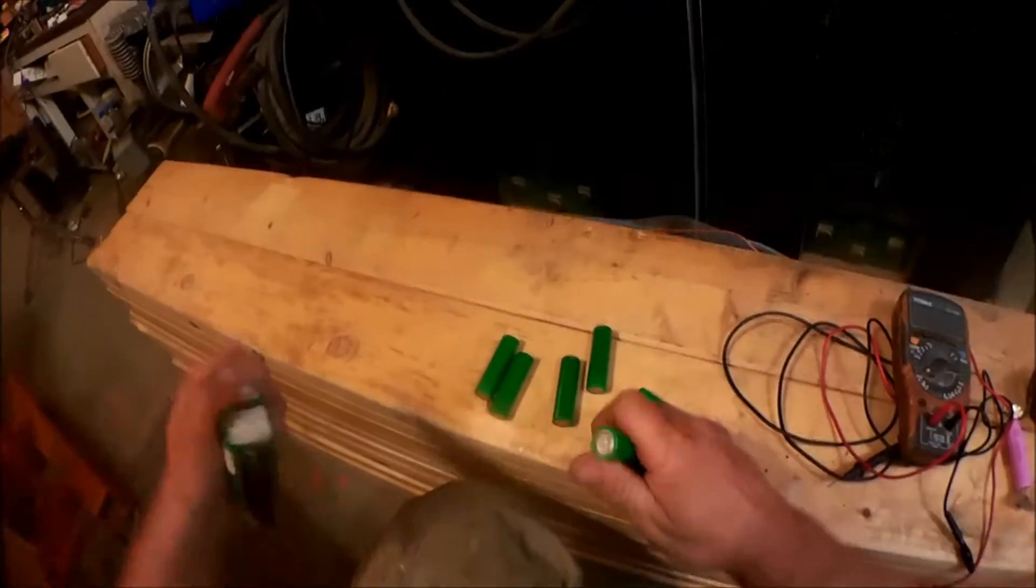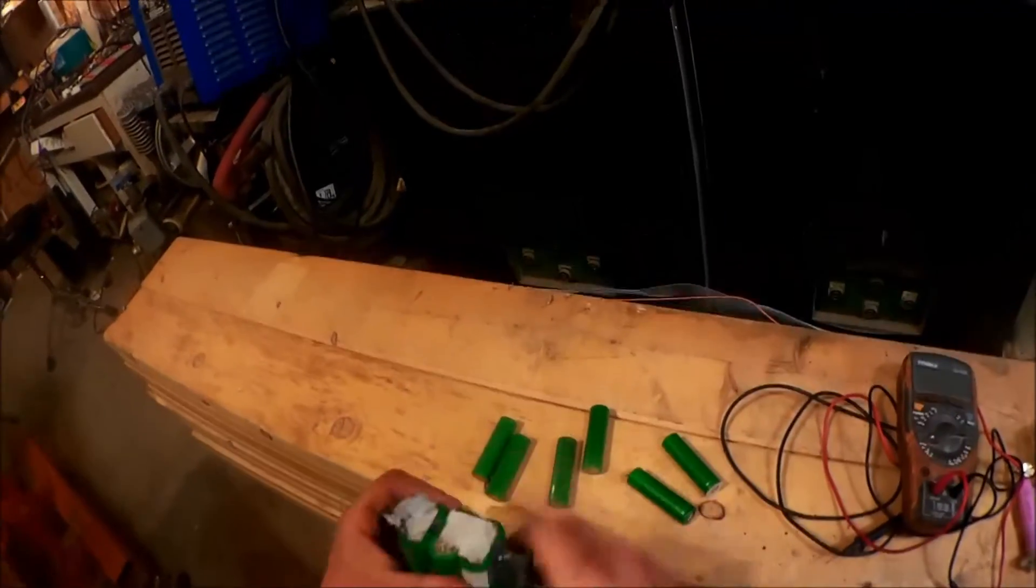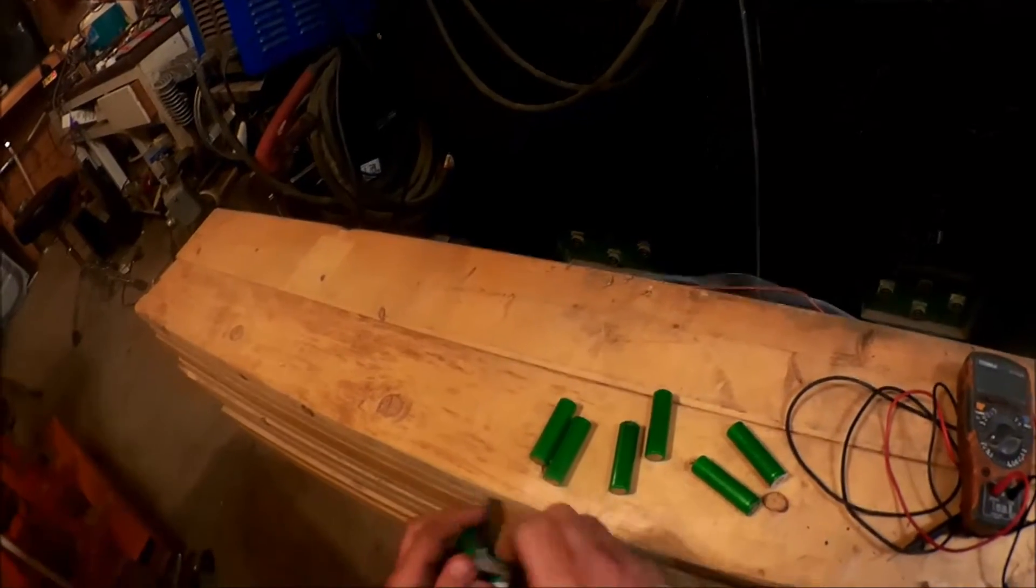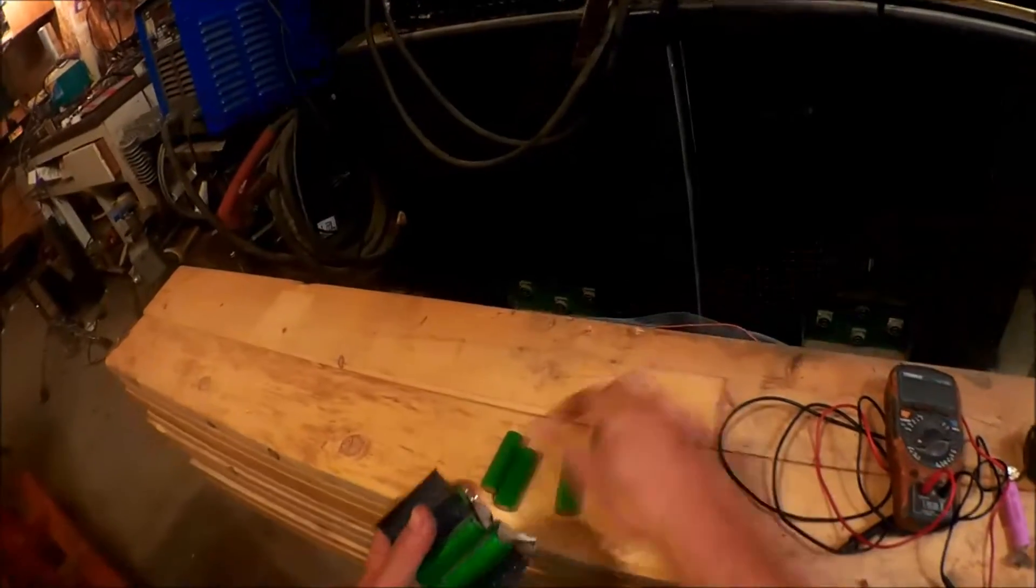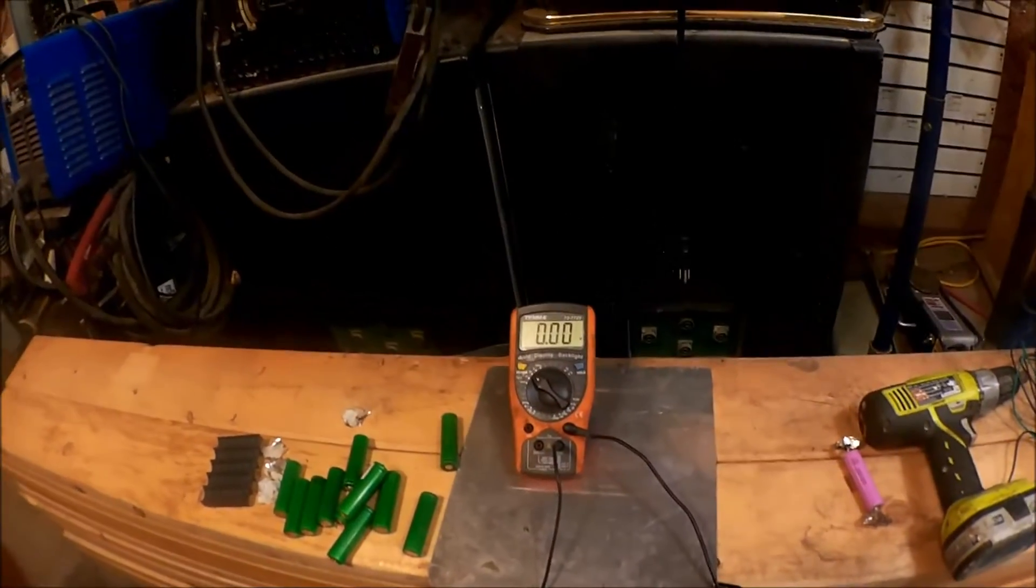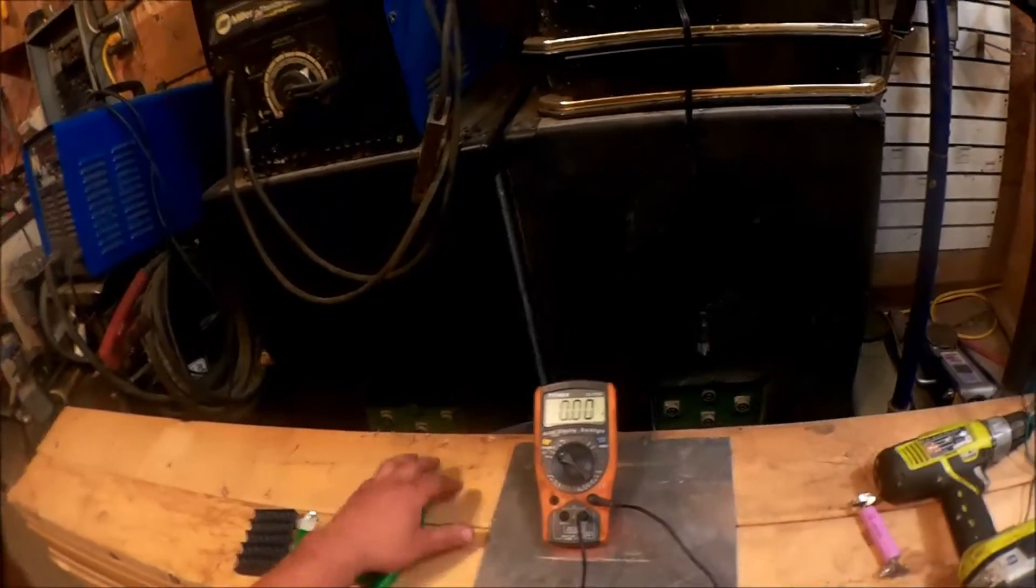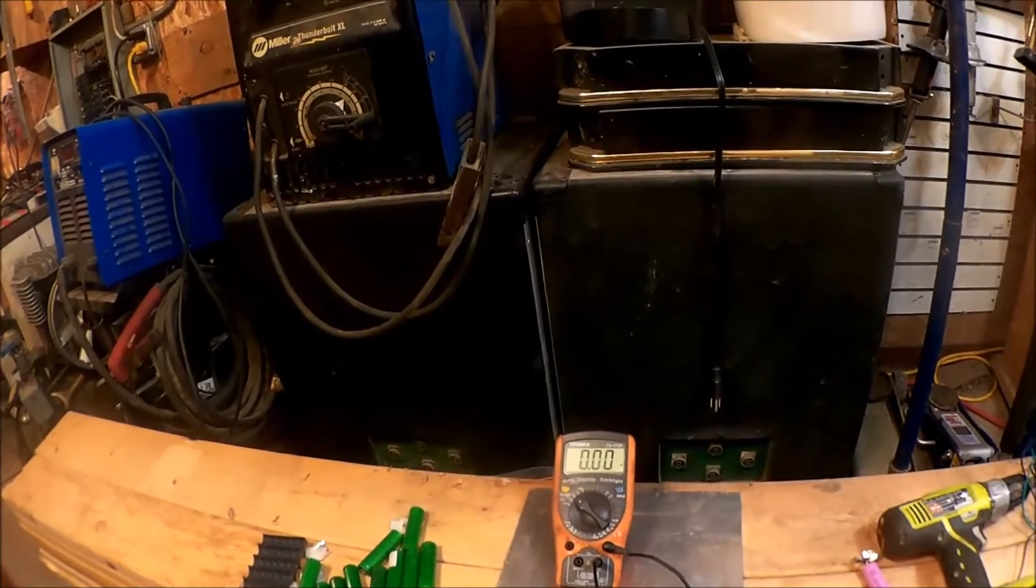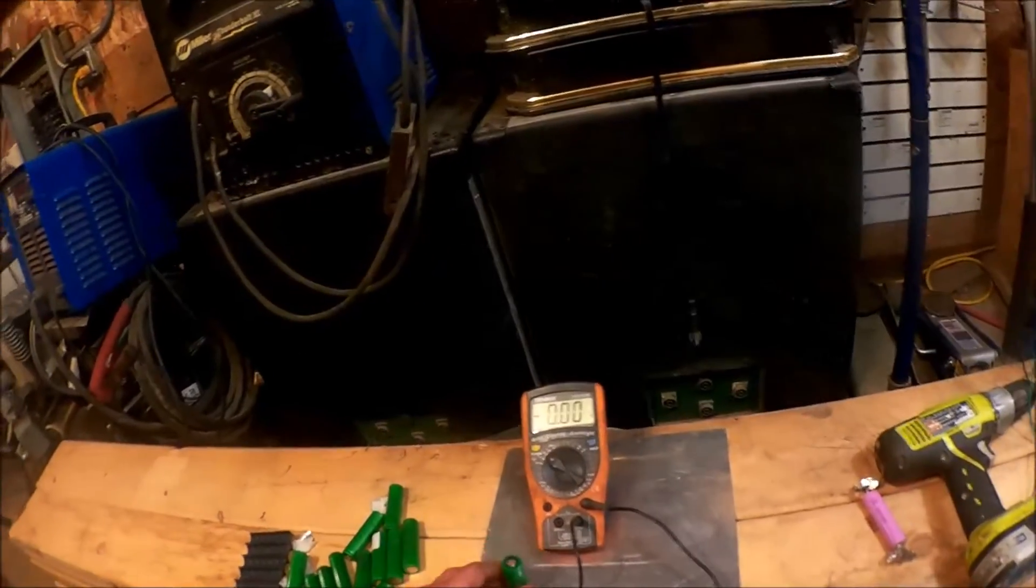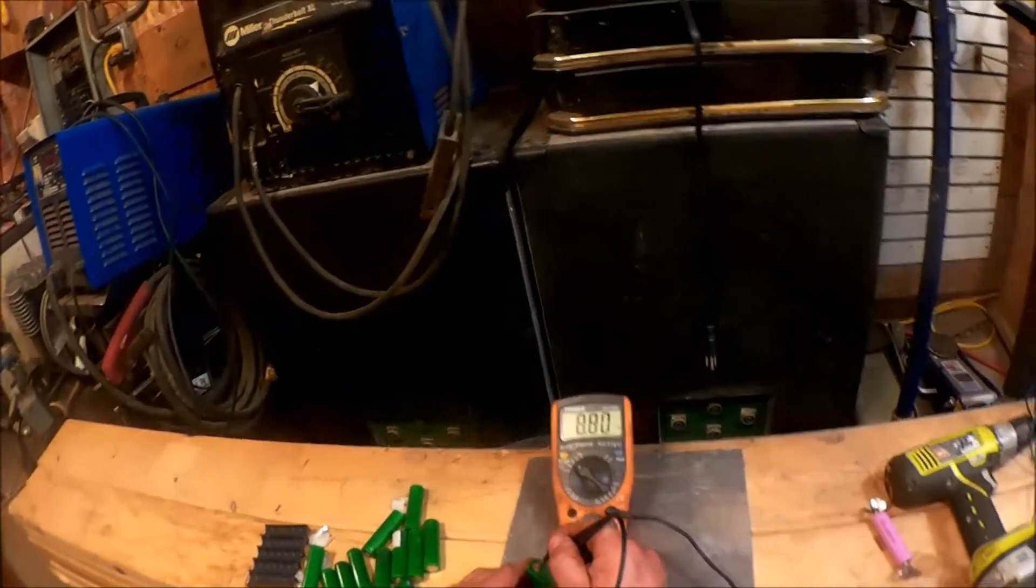Pretty much just rip these apart and I'll have to grind the old bits of tabbing off of here, of the ones that I decided to use. So the first test when selecting used cells to reuse would be the voltage. What voltage have they managed to maintain while being thoroughly neglected? And usually if they have a couple volts, that's a good sign.